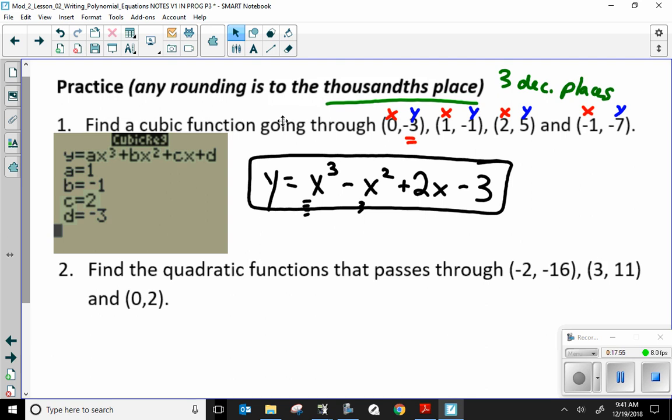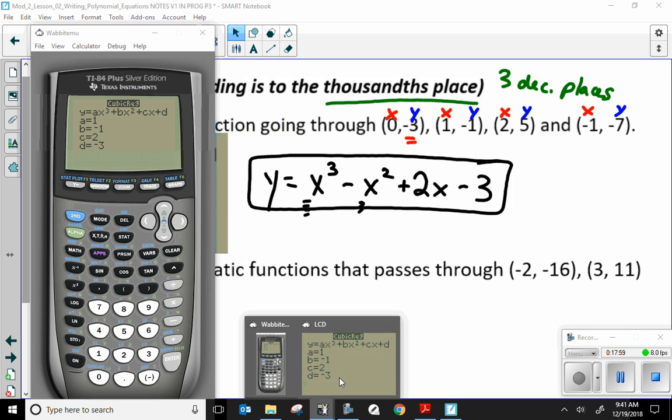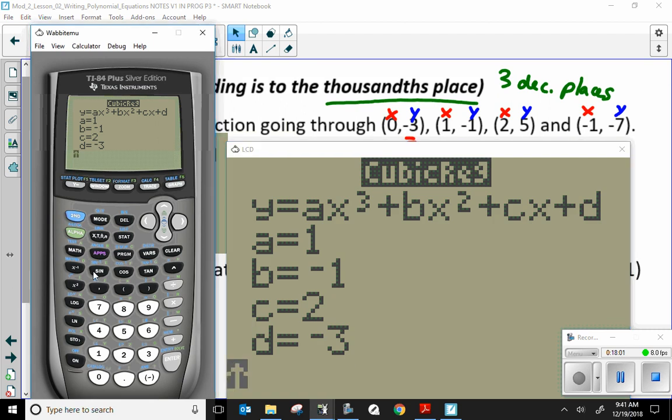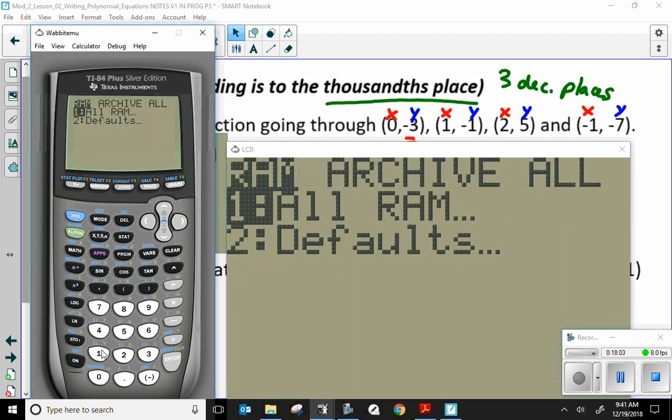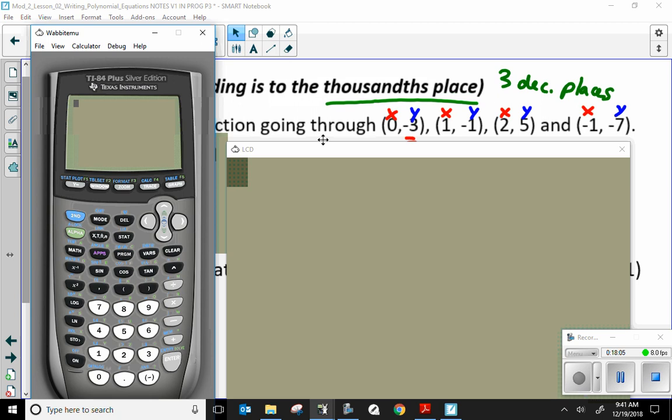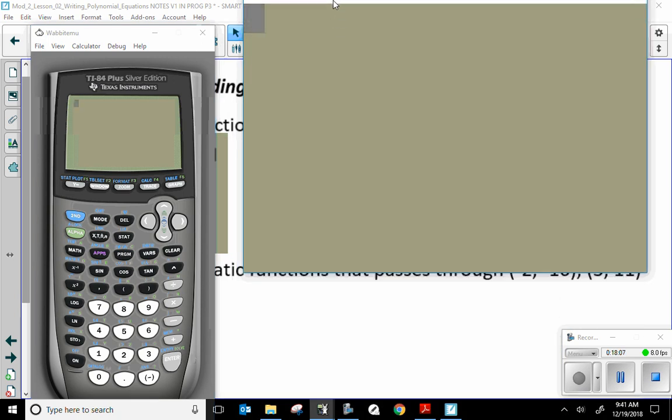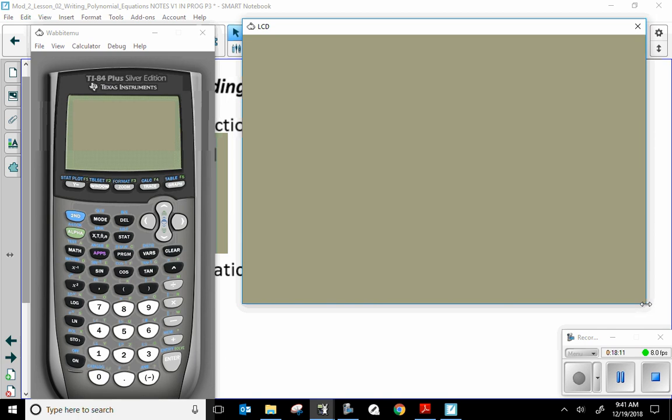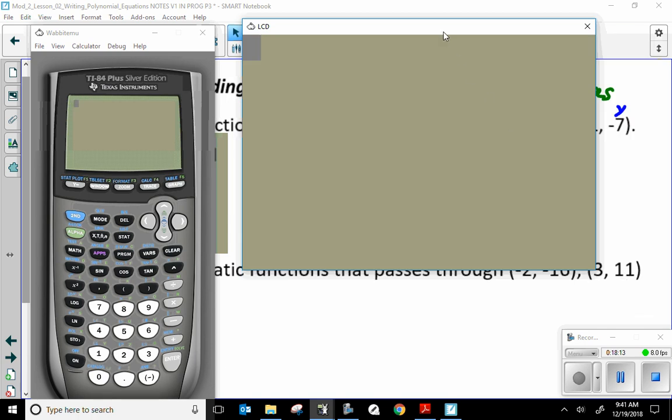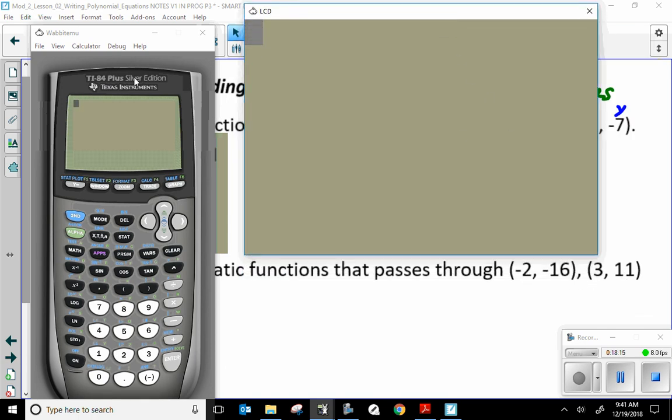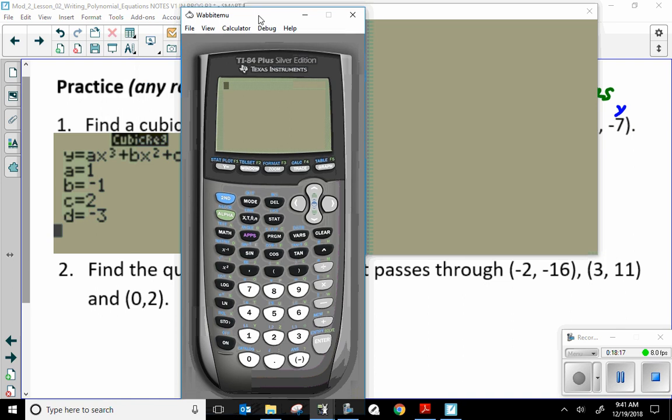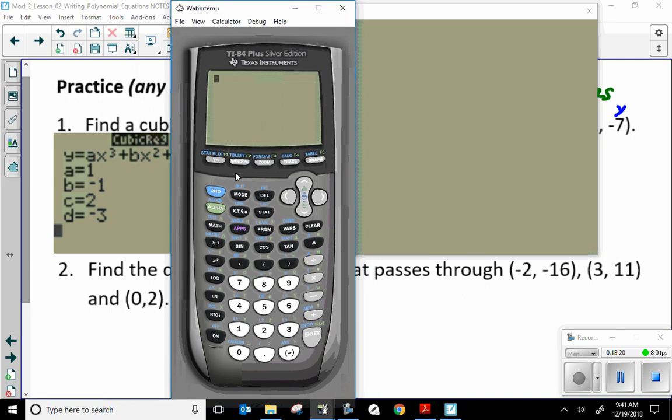Now, they want us to find a quadratic for the second one. So, again, if we want to clear all this stuff out. Second plus 7. 1, 2. It's good. And we... Oh, it's just off. So, let's minimize this a little bit. Wow. That was a lot. Bam. Now, we're going to do these. And, oh. There we go. We actually have them all. Yeah. There. Stat. Edit.